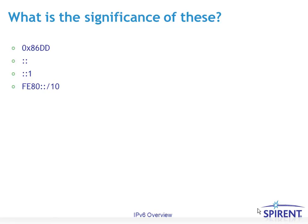FE80 colon colon slash 10 is the link local address for IPv6. In a way, it's similar to the automatic private IP address that would be configured in the absence of a DHCP server with IPv4. FF00 colon colon slash 8 is an IPv6 multicast prefix.